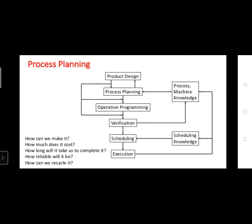After operation programming comes verification, which comes under quality. You check whether the pieces are as per dimensions and tolerances. If you are getting too many failure parts in verification, you go back to process planning and re-check the process, machine, and knowledge.